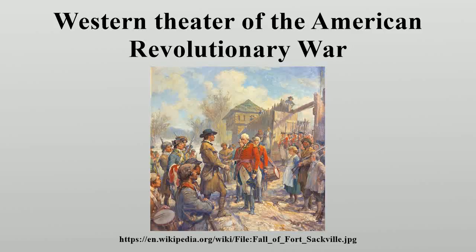The Western Theater of the American Revolutionary War was the area of conflict west of the Appalachian Mountains — the region which became the Northwest Territory of the United States, as well as the states of Kentucky, Tennessee, and Missouri. The Western War was fought primarily between American Indians with their British allies in Detroit and American settlers south and east of the Ohio River.